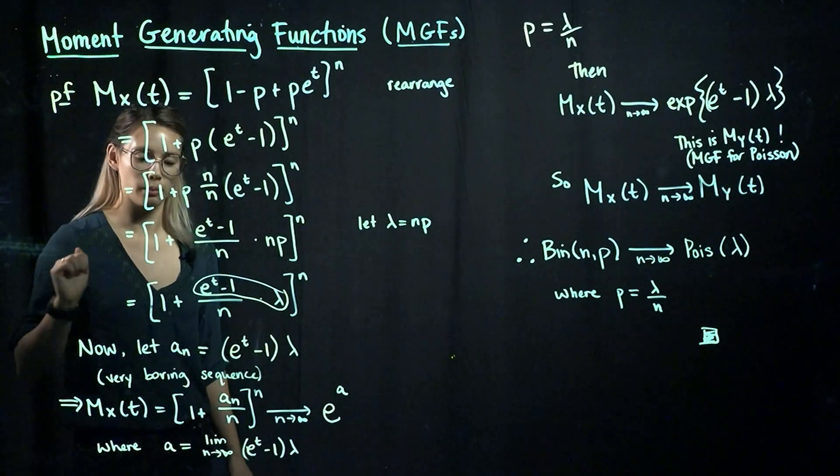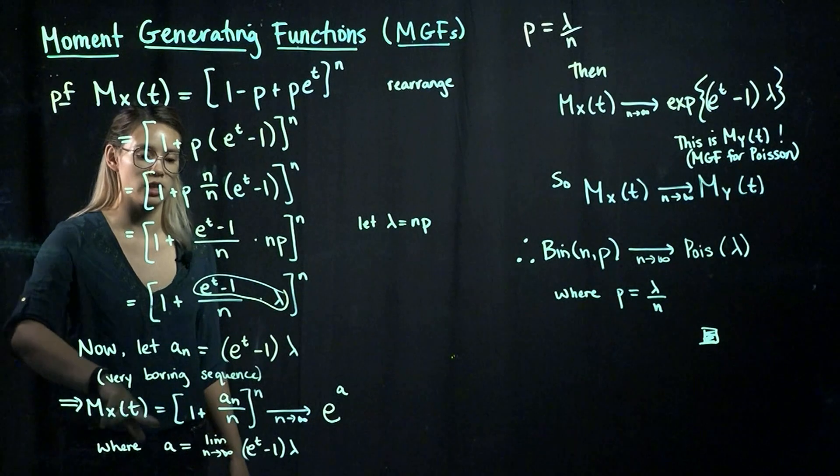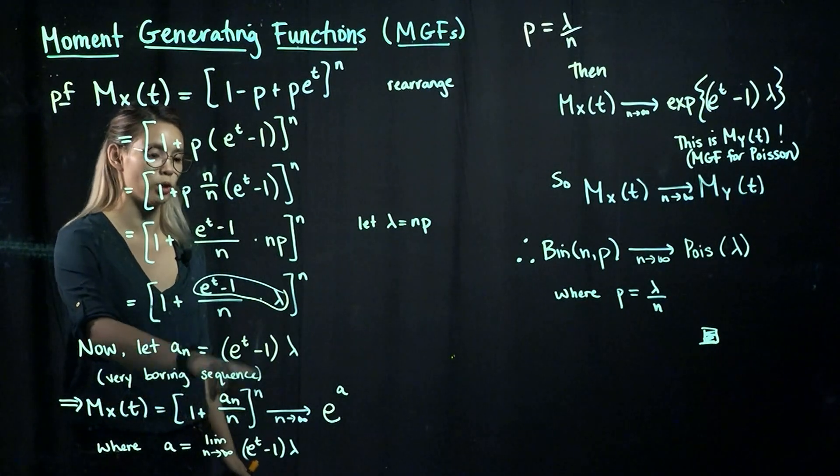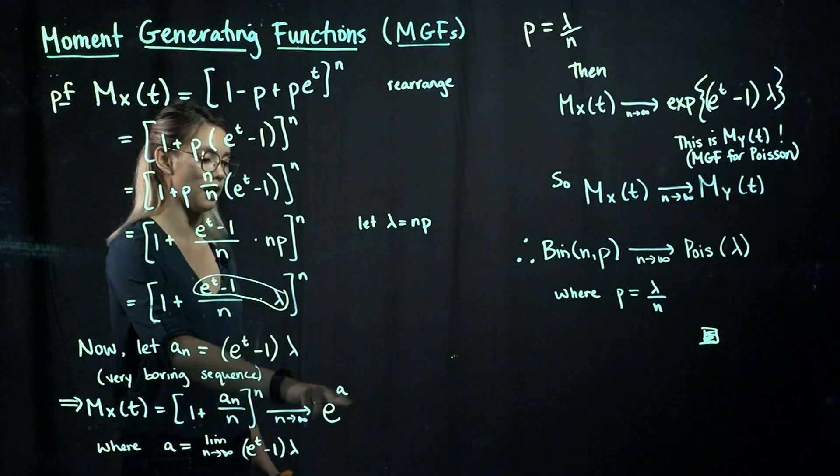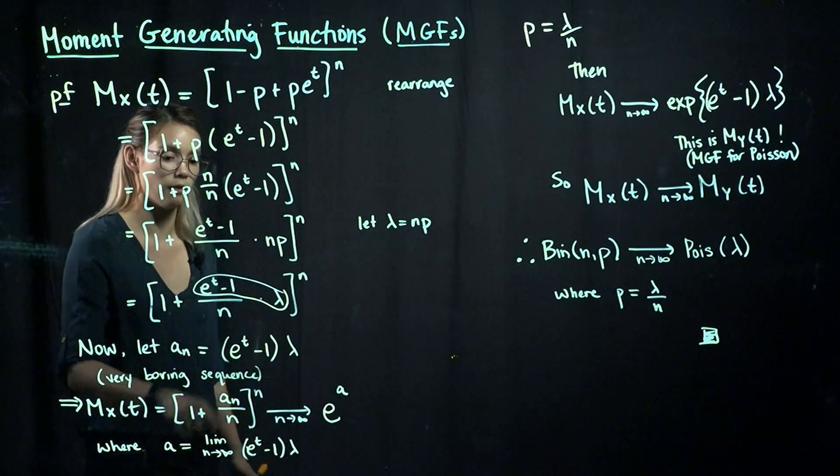All right, so we apply that lemma, and that gives us that our MGF is equal to this, which will converge to e to the a. So now we need to figure out, well, what is a? What is the limit of our sequence here?